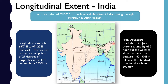Coming to the latitudinal extent, the Tropic of Cancer at 23.5 degrees north divides India into two equal halves: one is tropical from the equator to 23.5 degrees, and then from 23.5 degrees to 37.6 degrees it is the subtropical region.